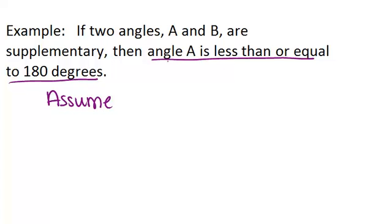So that means we're going to assume the opposite of this right here. We're going to assume the opposite of angle A is less than or equal to 180 degrees. So the opposite of being less than or equal to is being greater than. So assume angle A is greater than 180 degrees.